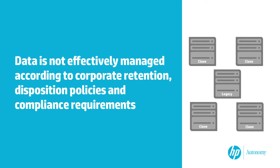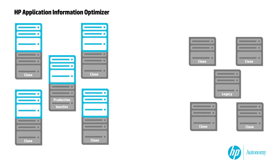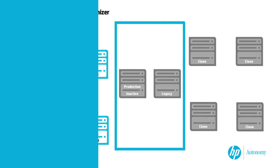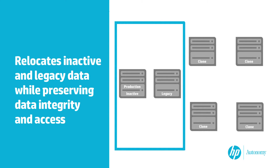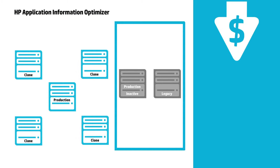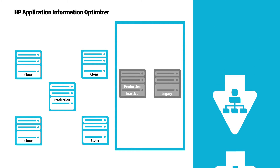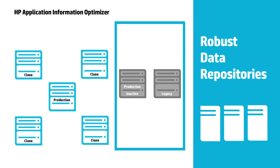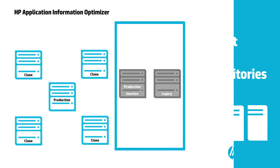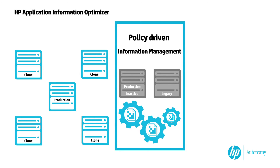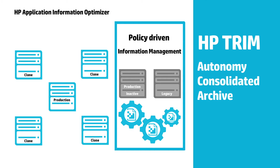Our approach is as follows. The HP Application Information Optimizer relocates the inactive and legacy data while preserving data integrity and access. The production database and its clones' data footprint drops, and the legacy database and its clones are then decommissioned, leading to immediate capital and administrative savings. The target destination for the extracted data is accommodated by pre-built integrations with a robust set of data repositories. One option is to ingest the extracted data into a policy-based information management system to enable secure access, complete lifecycle management, and defensible disposition of the data.